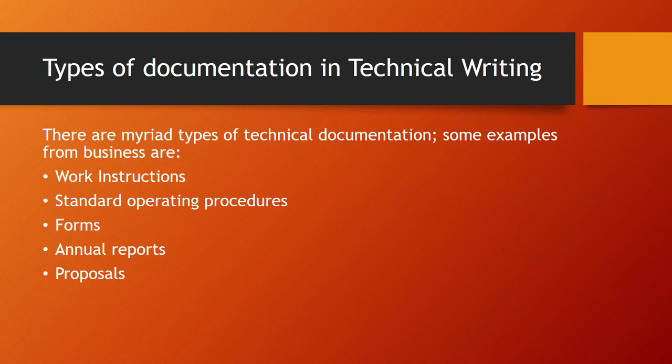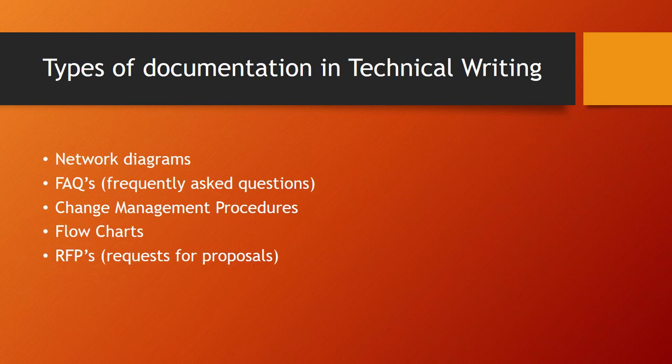There are myriad types of technical documentation. Some examples from business are work instructions, standard operating procedures, forms, annual reports, or proposals. A writer of technical documentation might write some or all of these things. Some other examples include network diagrams, frequently asked questions, change management procedures, flowcharts, and requests for proposals.